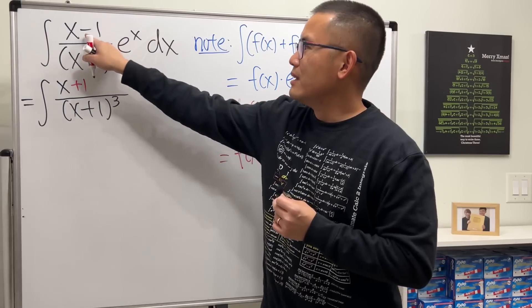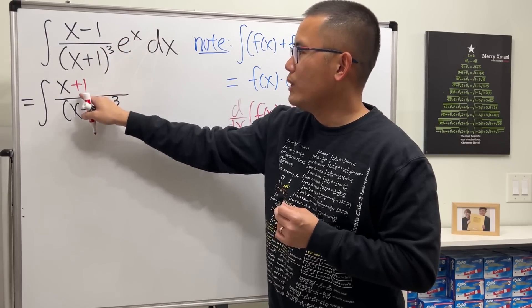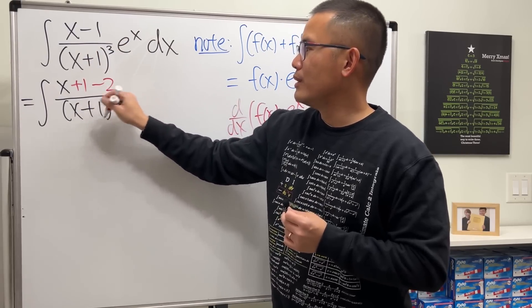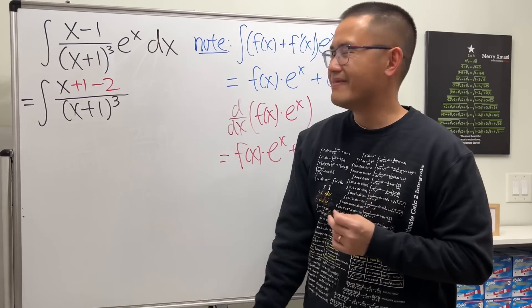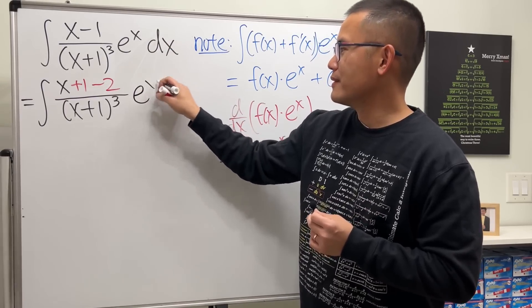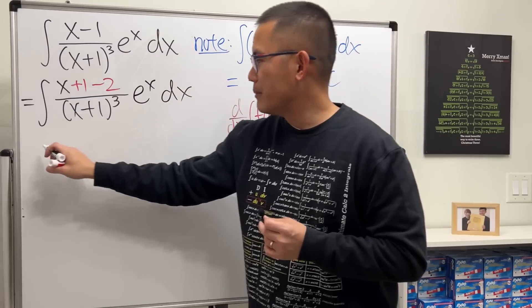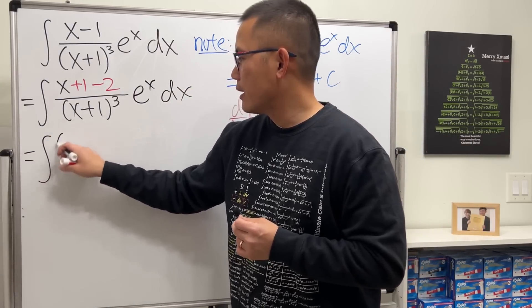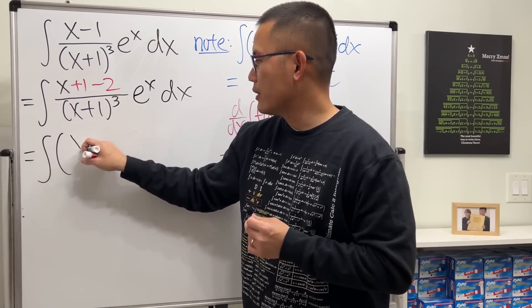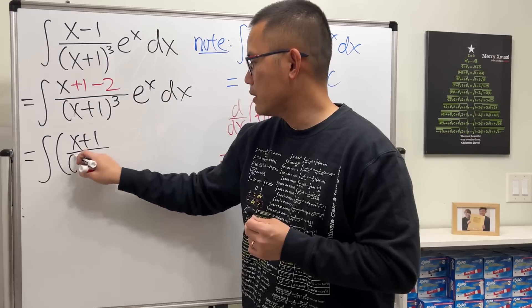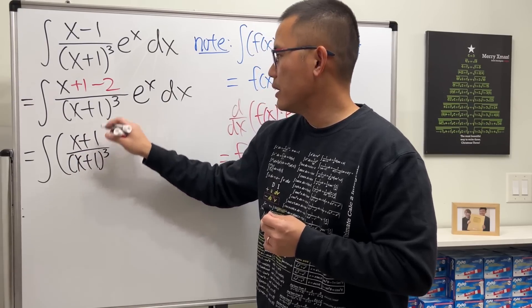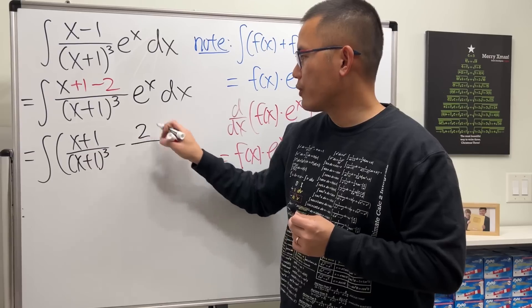Now I'm going to split the fraction. I'm going to do this over that, so (x+1)/(x+1)³ and then minus 2/(x+1)³ times e^x.